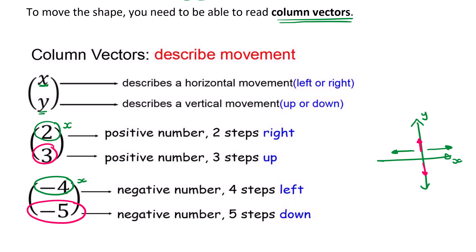You can have a column vector with 0, something like 0, 3. This means that there is no movement left or right, but there is three steps up. So you could have a vector that has one of the numbers as a 0.